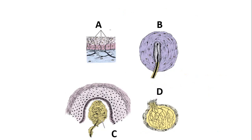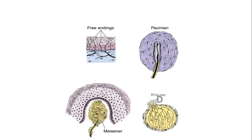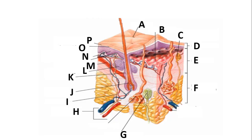Let's start and look at this first part. We have been asked to label the structures which have been projected. A is showing the free nerve endings, B is showing the Pacinian corpuscle, C is showing the Meissner's corpuscle, and the last one is the Krause's end bulb.